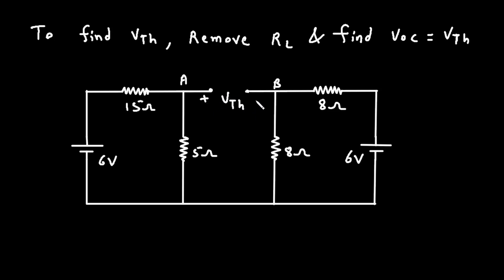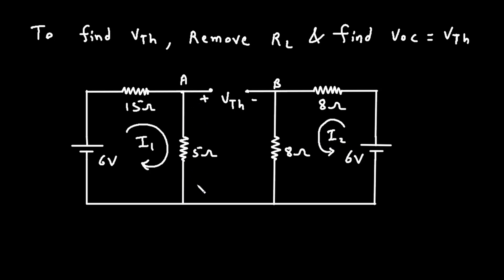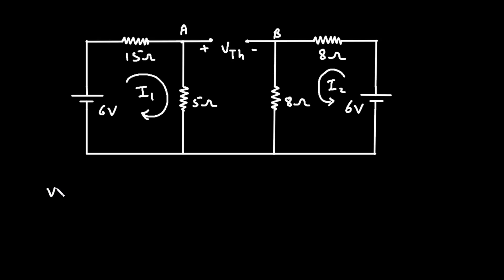This is VTH — positive on this side, negative on this side. Now we can easily find the value of VTH. Let's say this is loop number 1 with current I1, and this is loop number 2 with current I2. We have to find the voltage across the 5 ohm and the voltage across the 8 ohm. That means VTH is equal to VA minus VB, where VA is the voltage across the 5 ohm and VB is the voltage across the 8 ohm.